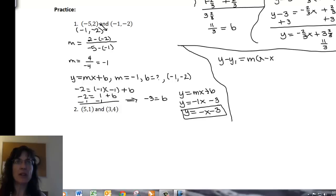My m is still a negative 1, and my x, y, or I can choose which ones I want, negative 1, negative 2.